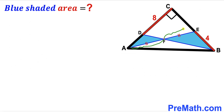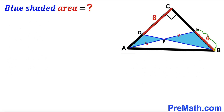Moreover, segment CD is 8 units and segment EB is 4 units. Our task is to calculate the area of this blue shaded region — this area and this area combined.